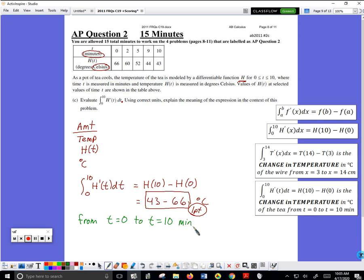The temperature - you can abbreviate temperature - of the tea drops negative 23 degrees and it has to be in Celsius. So if you have the green box, they'll give you one point.